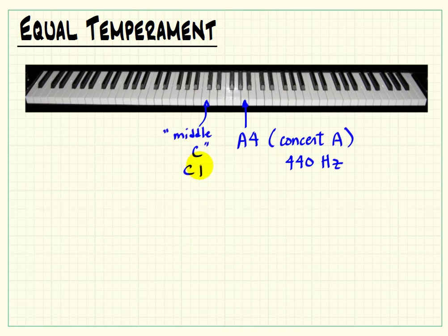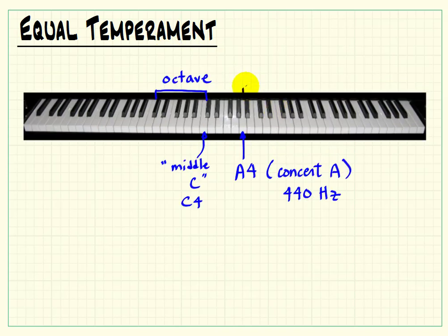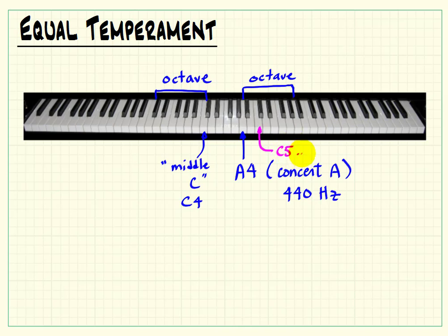You've definitely heard of middle C at some point in your life. That's called C4, and if we go one octave below middle C we would have C3. The number is telling us which octave we're on. On a keyboard, you simply find the key that looks exactly the same either up or down — that defines one octave. A couple notes up from concert A is another C, denoted as C5.